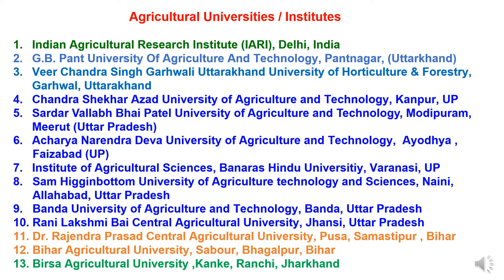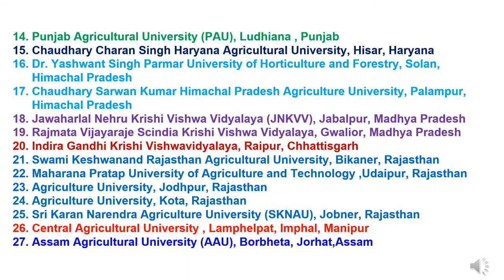Eleventh is Dr. Rajendra Prasad Central Agriculture University, Pusa, Samastipur, Bihar. Twelfth is Bihar Agriculture University, Sabour, Bhagalpur, Bihar. Thirteenth is Birsa Agriculture University, Kanke, Ranchi, Jharkhand. Fourteenth is Punjab Agriculture University, PAU, Ludhiana, Punjab. Fifteenth is Chaudhary Charan Singh Haryana Agriculture University, Hisar, Haryana.